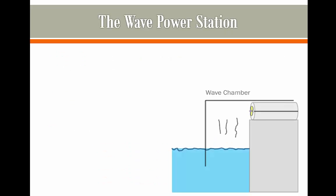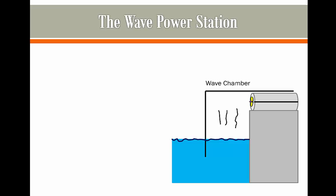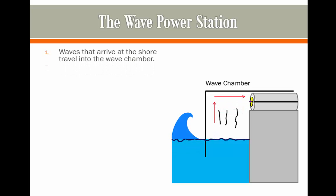So how does a wave power station work? Well, this is what a wave power station looks like. We have an elevated platform next to the sea, and then we have a chamber which the sea's waves can then flow into. The sea's waves flow into this chamber and then we start to get air moving.